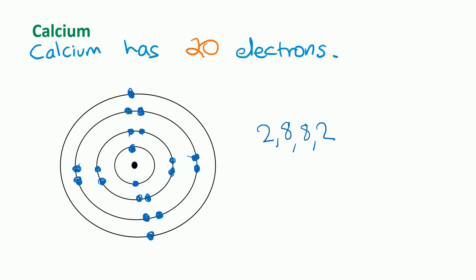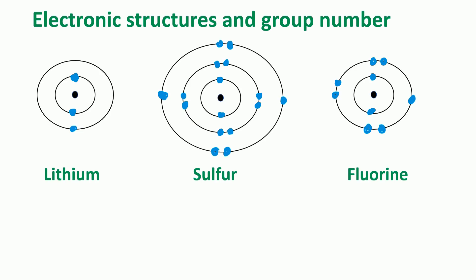The first important point is how the electronic structure of an atom relates to its group number on the periodic table. Looking at the examples we've drawn — lithium is in group 1, sulfur is in group 6, and fluorine is in group 7. What we notice is that the group number equals the number of electrons on the outer shell of that atom.